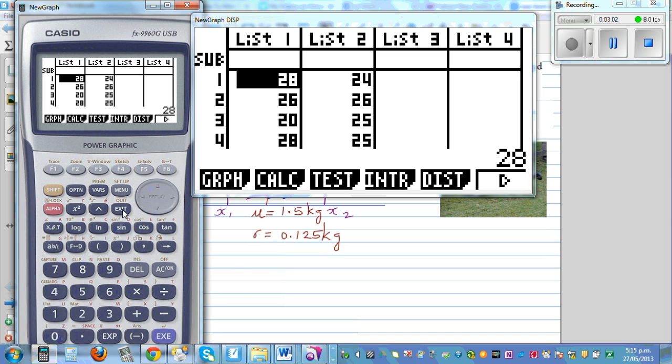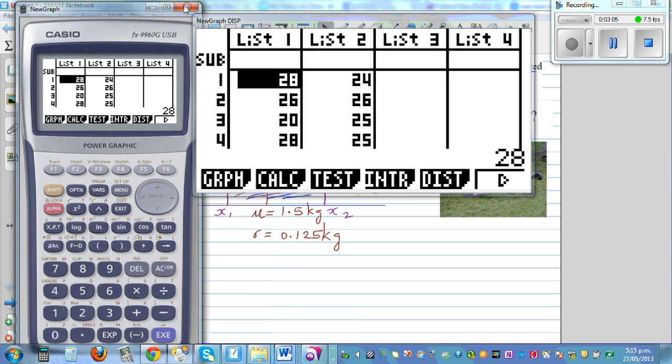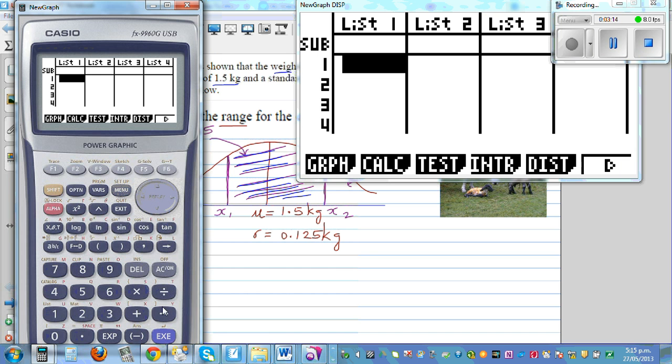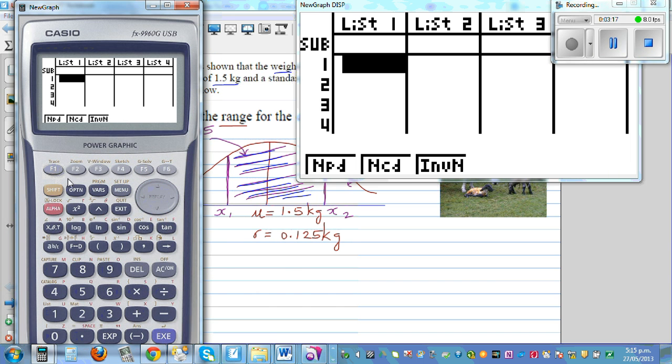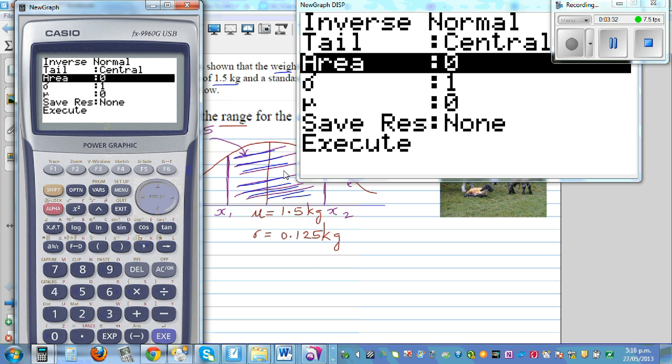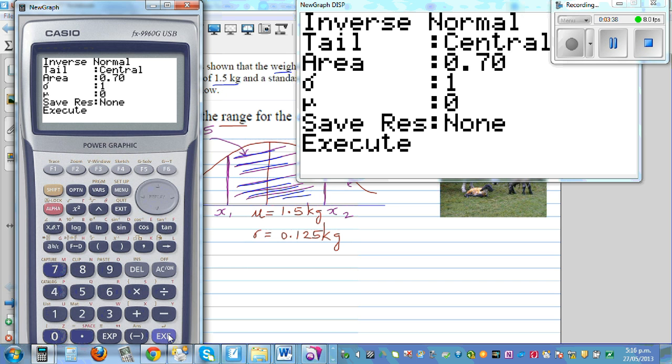If you have a graphic calculator, first go to stats, go to distribution, go to normal. And this is called inverse normal, so press inverse normal. You have got left, right and center. We are focusing on the center, so click on F3 which is central. Now the calculator is asking you what is the area of that central region. So that is 0.7.